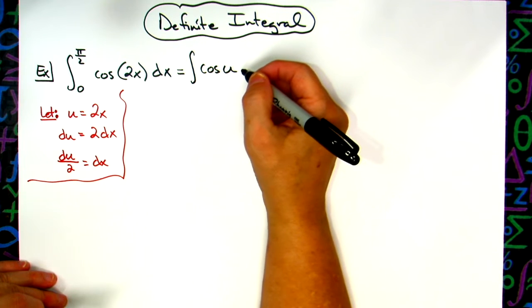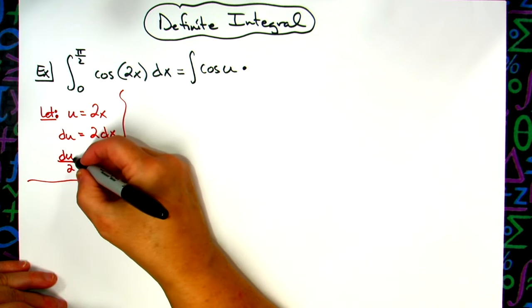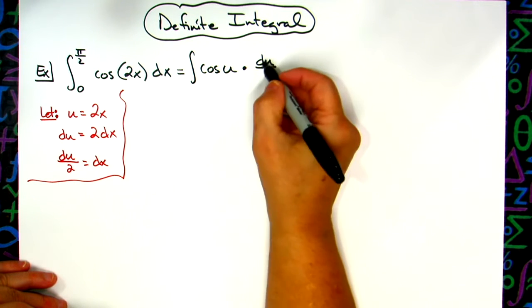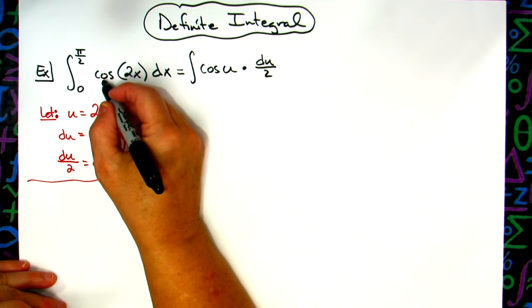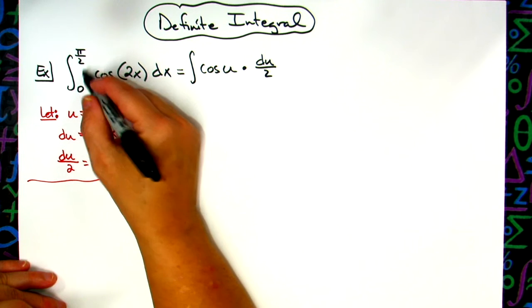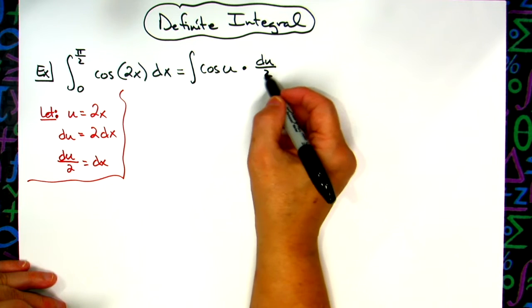I'm going to have cosine. I'm going to replace the 2x with a u, so now I am no longer writing an equation in terms of x. I've got some u's in here, and then I'm going to replace that dx with a du over 2. So here I have an equation written in terms of u. That's why I am removing those limits of integration, because these limits of integration are limits of integration for x.